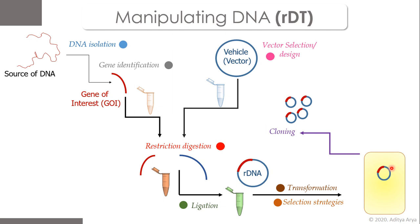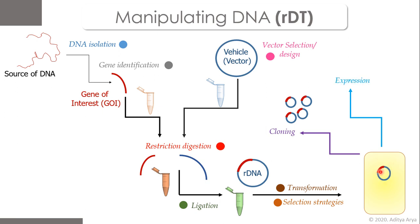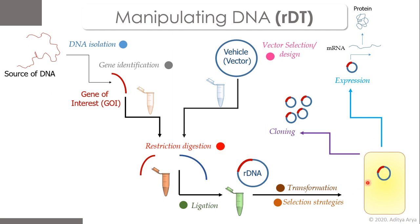If the cloning vector is modified to allow the gene of interest to also express itself, it becomes an expression vector. The second application is expression of the foreign DNA in a specific host cell, involving transcription of the foreign gene, formation of mRNA, and production of a specific protein. This is commercially important because human proteins for pharmaceutical purposes can be produced in bacterial cells at very low cost and at commercial scale.